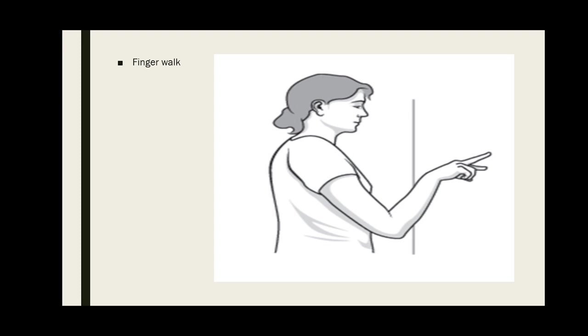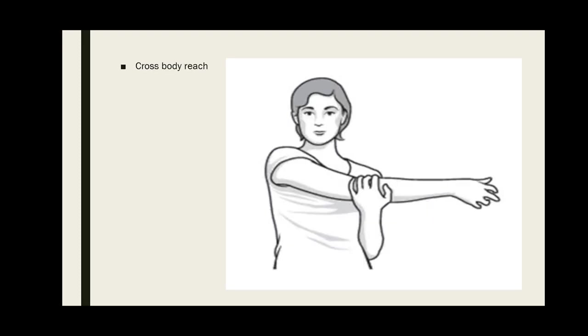Cross body reach can be done in standing or sitting position. Your back should be straight. Stretch the affected arm out across the body diagonally. Bend the unaffected arm from the elbow and hook it under the affected arm, supporting it as shown. Hold the stretch for 10 to 20 seconds, then relax and repeat.